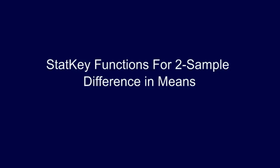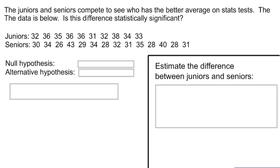Let's look at the StatKey functions that we're going to run into when dealing with a difference in two means. We have this example here. It says the juniors and seniors compete to see who has the better average score on state tests. So we're looking for a higher average between juniors and seniors, our two groups. The data is below. That's down here. Is the difference statistically significant?